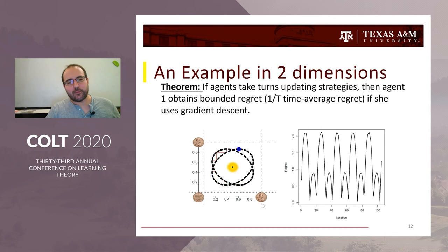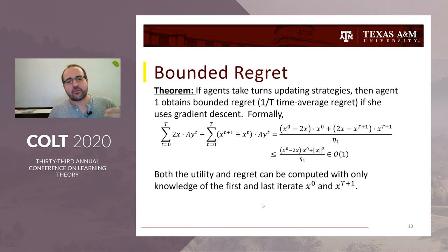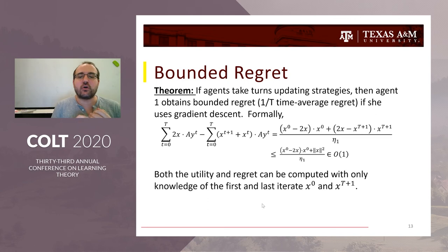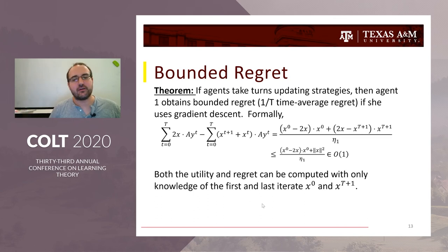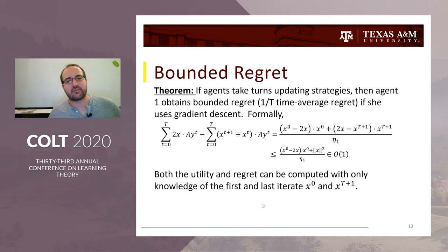Before moving to the dynamics, I want to go back to the theorem statement one more time and observe that the regret — and in fact the utility — are defined solely by the first iterate and the last. That's fascinating: you can take any path to get to your final strategy, but I can determine your total utility based only on your final strategy. Your path doesn't actually matter.